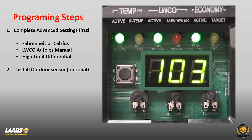Next is step two. If you don't have to make any changes under advanced settings, go right to step two, which covers the optional outdoor sensor. We'll get into installing the outdoor sensor, adjusting your warm weather shutdown, and adjusting your reset ratio curve.